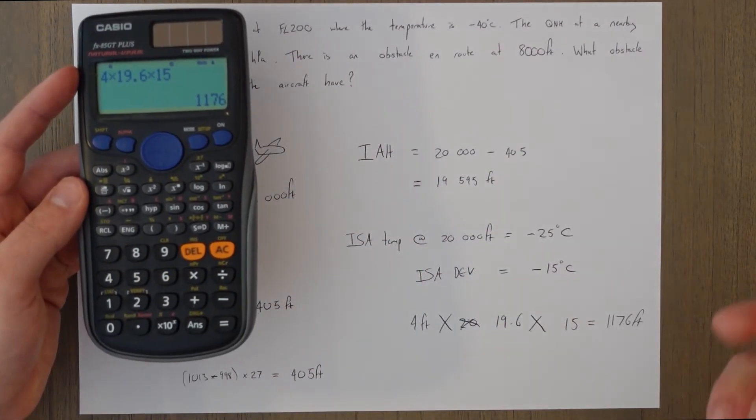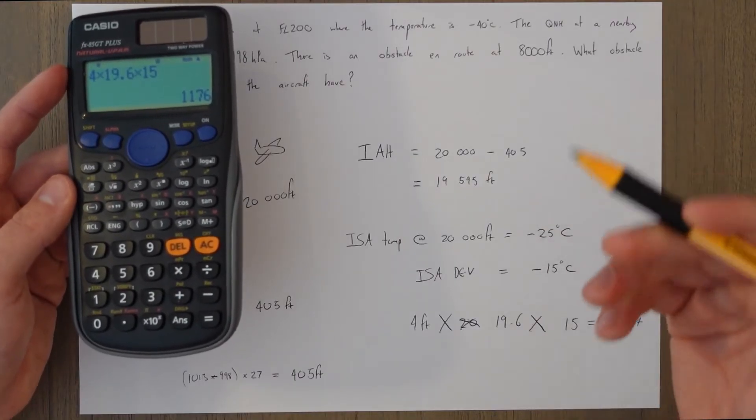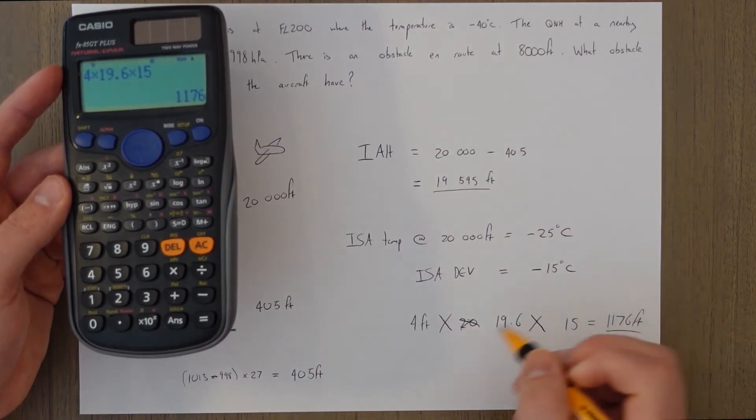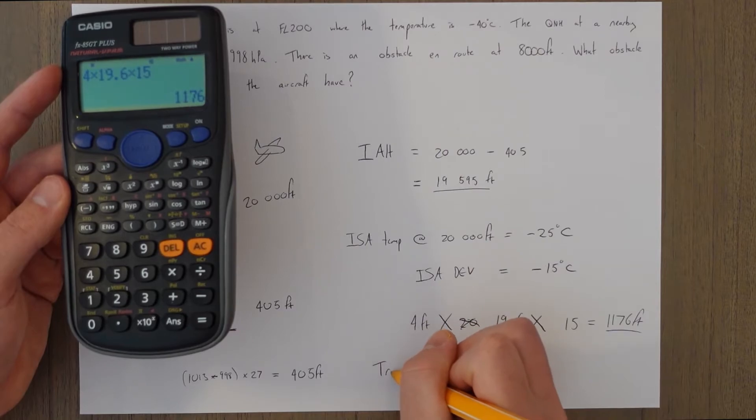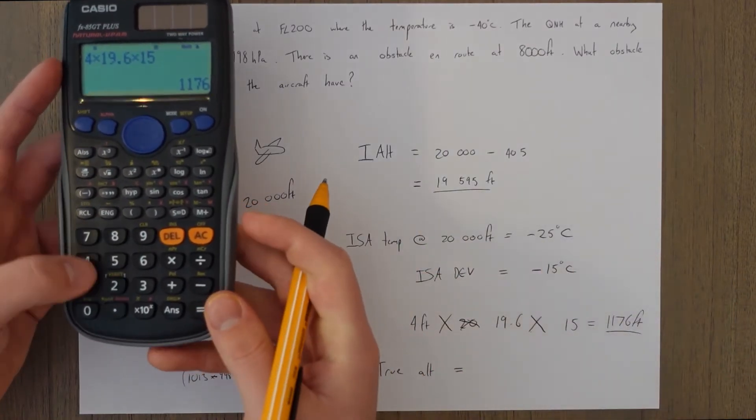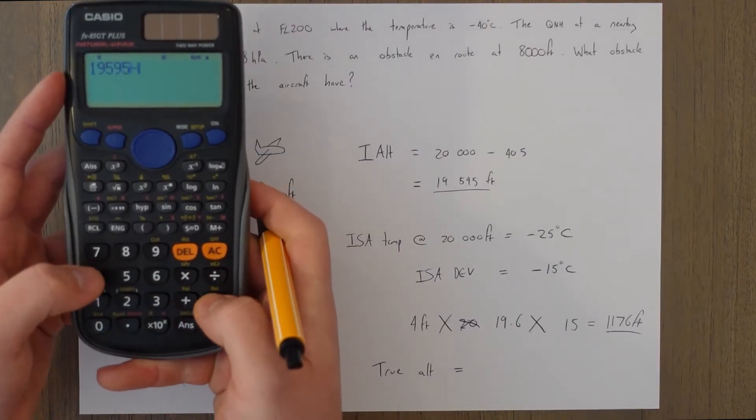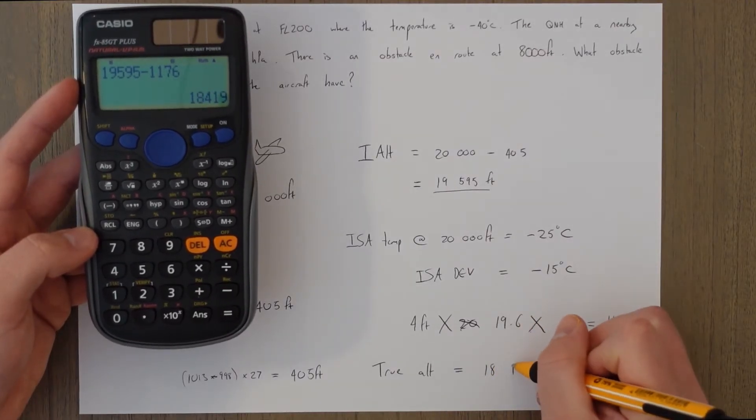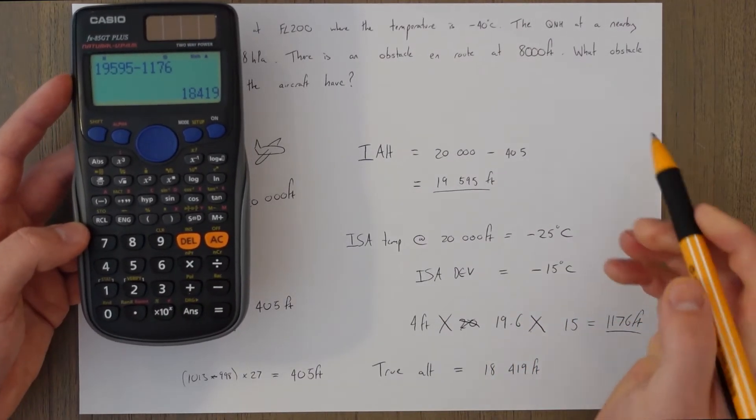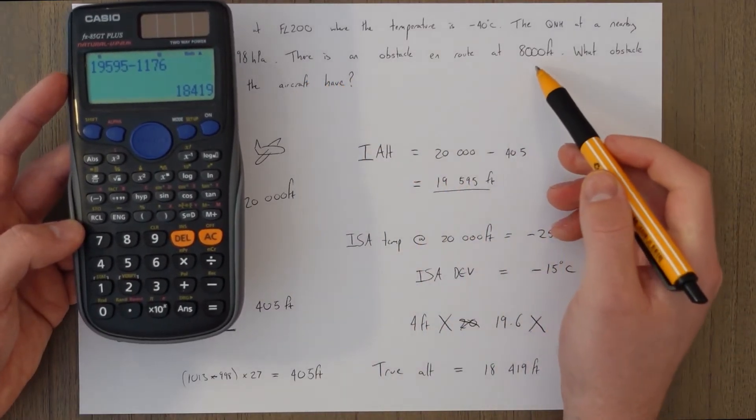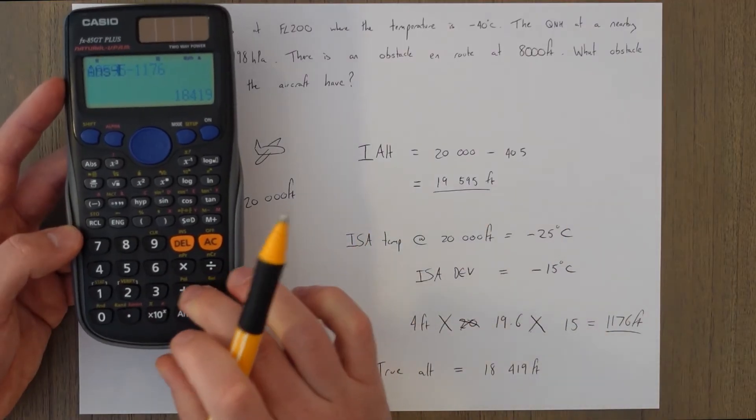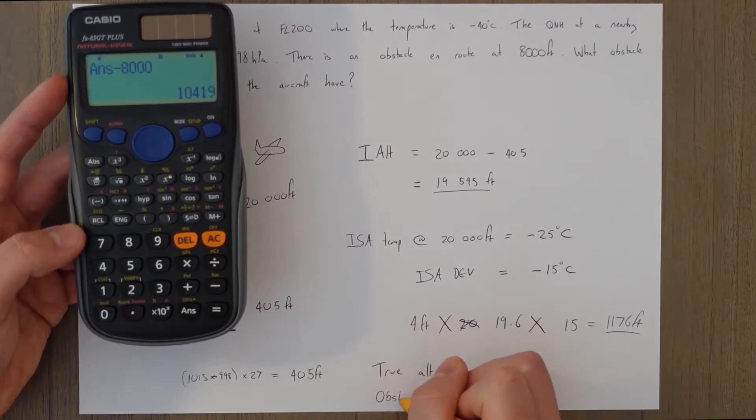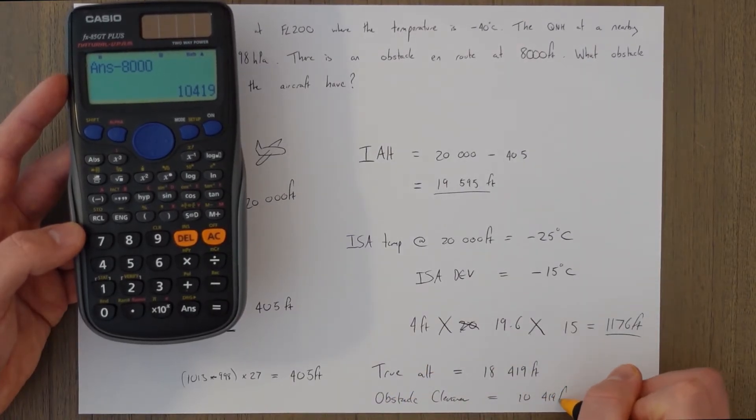1176 feet of altitude correction to make. And we're going to be lower because it is colder than ISA, everything's getting squished together, so it's going to be this answer take away this number. So our true alt is equal to 19,595 minus 1,176, that's going to be 18,419 feet. And we're asking for the obstacle clearance, so how far above this 8,000 feet obstacle are we? Just take away the 8,000. Our obstacle clearance is equal to 10,419 feet.